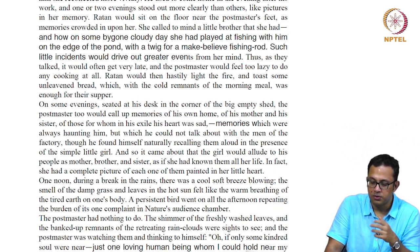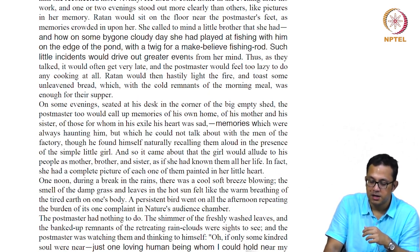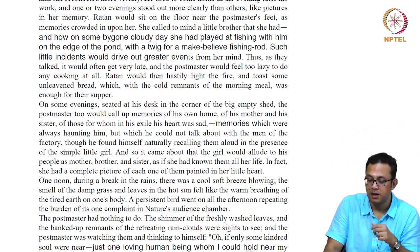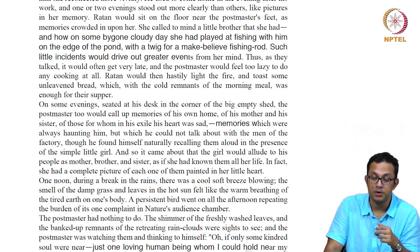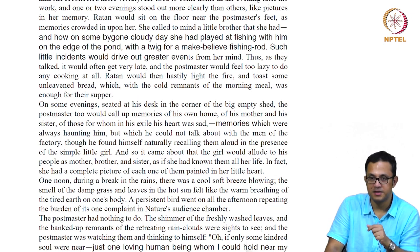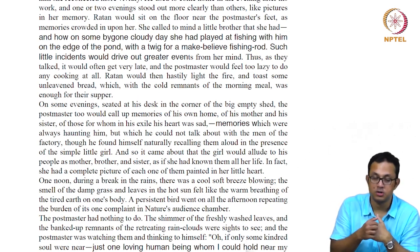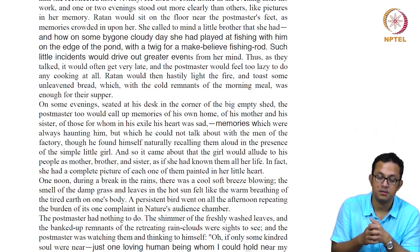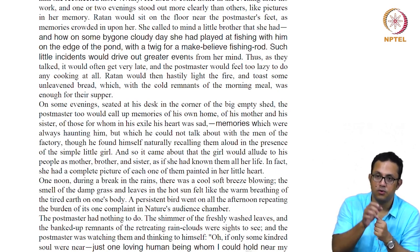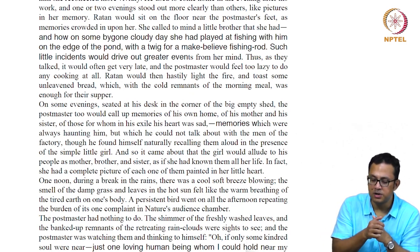A persistent bird went on all the afternoon repeating the burden of its one complaint in nature's audience chamber. It feels like it is a complaint to nature. The story is also a good example of focalization — the entire story is focalized through the postmaster's imagination. He is the focalized character, so we see everything in the setting through the postmaster's eyes. It seems as if the little bird here is complaining about something to Mother Nature. The postmaster is the focal character — the cognitive prism through which we see the rest of the story unfolding before us.